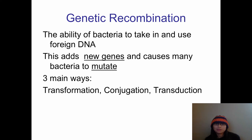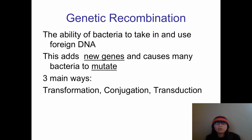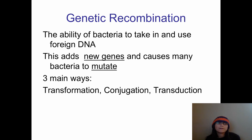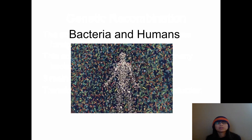Bacteria are unique organisms with many interesting traits. One interesting thing is their ability to pick up DNA and use it. A bacterium can find DNA just kind of laying around, take it inside, and incorporate it into their genome, where they can read the DNA instructions and act on them. This gives bacteria new genes and causes mutations, making them different from the bacteria they came from. There are three ways bacteria can pick up or share DNA: transformation, conjugation, and transduction — and we'll look at these three in our vocabulary.